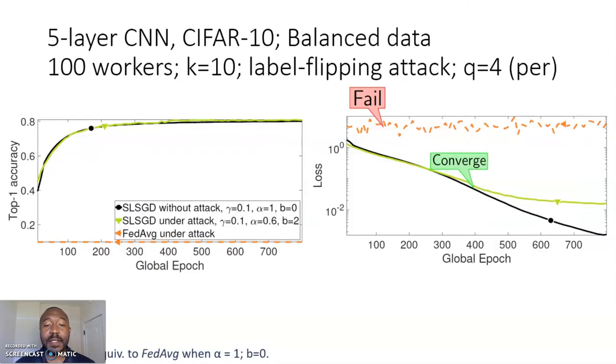Here are some experimental results on CIFAR-10, highlighting robustness to label flip errors. Here, 10 workers out of 100 are selected randomly in each iteration. There are up to four attack workers. Here, all of the labels under training data on an attack worker are flipped, from initially being 0 to 9 to 9 to 0. Each worker has the same amount of data, and the left plot shows accuracy, so higher is better, and the right plot shows the loss, so lower is better.